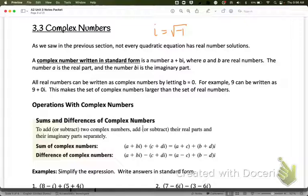Now all real numbers can also be written as complex numbers by letting b equals 0. So the number 9 could be written as 9 plus 0i. This makes the set of complex numbers larger than the set of real numbers.